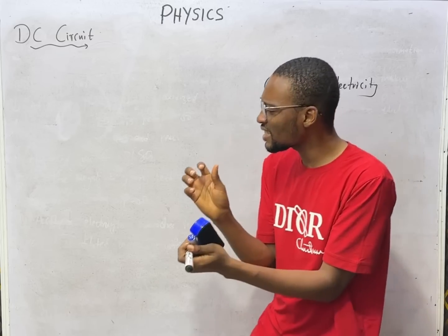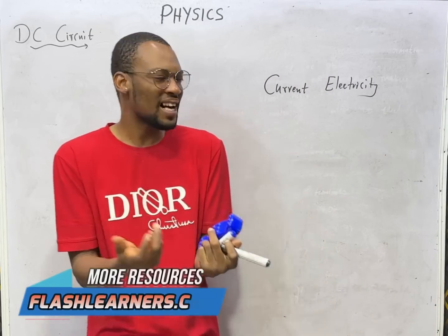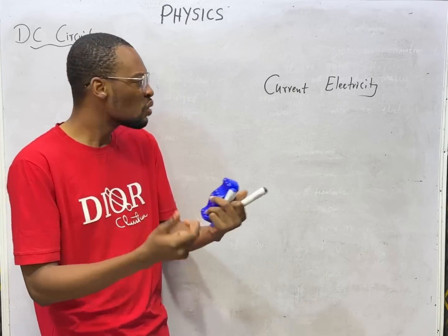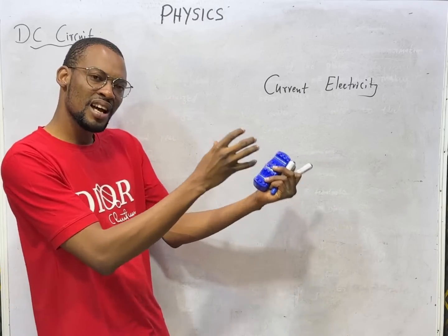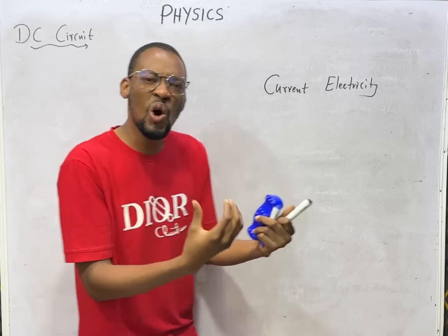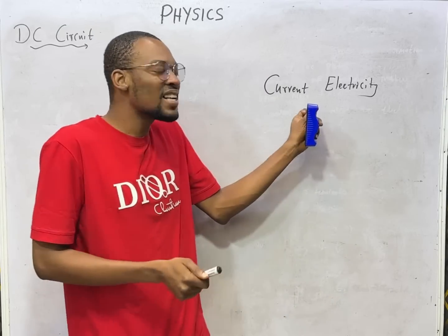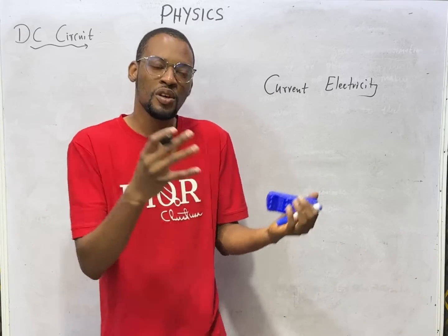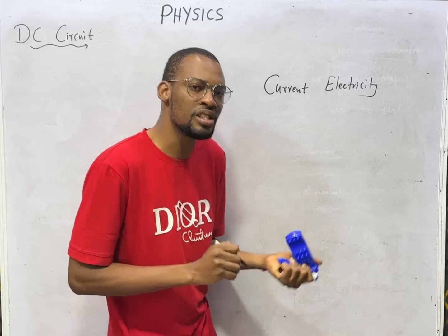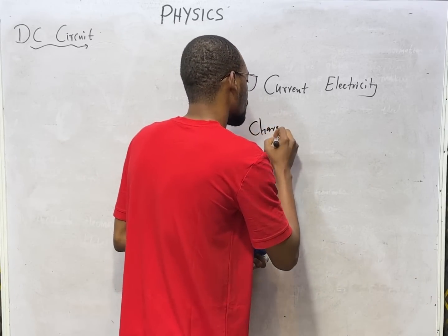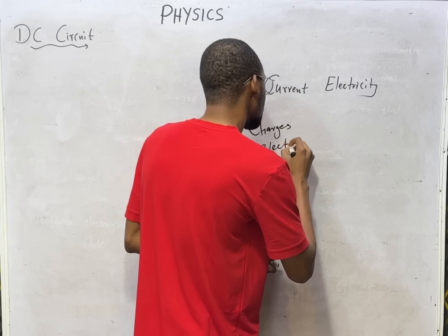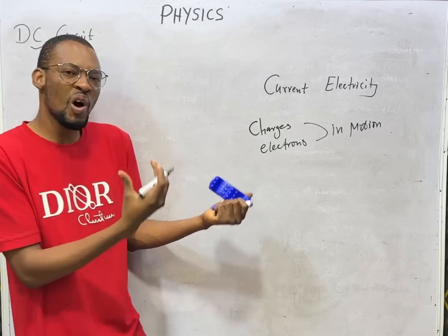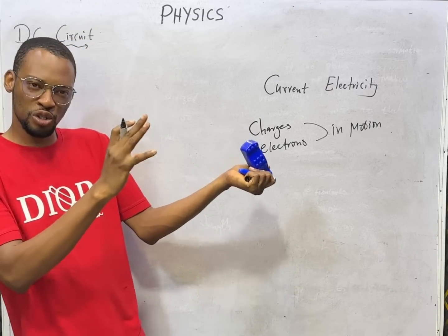Earlier we looked at electrostatics, also referred to as static electricity. We said that static electricity is produced by charges at rest, which means electrostatic charges are at rest. In current electricity, the charges are not at rest — current electricity is a function of charges or electrons in motion.